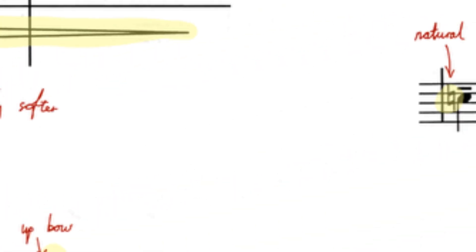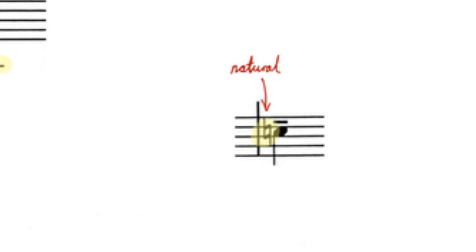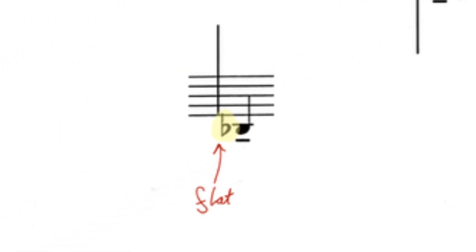The violin two part also features some accidentals placed to the left of the note heads. This natural sign cancels out the C sharp from the key signature, meaning that the note is a C, and this flat changes the note from a B to a B flat.